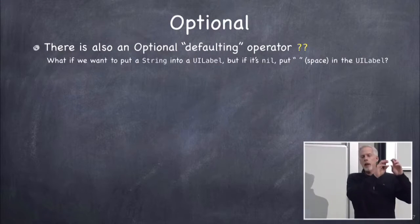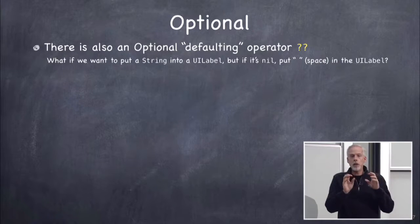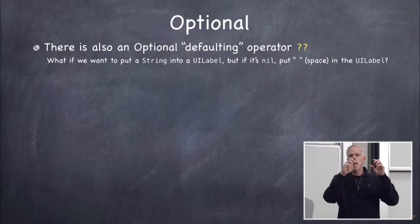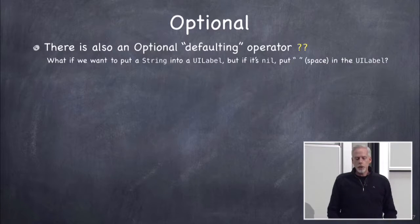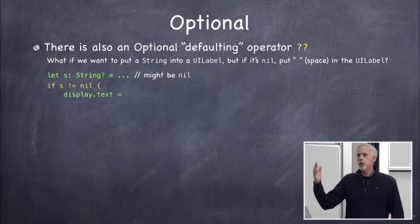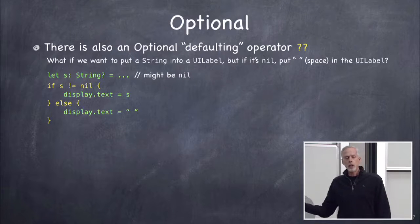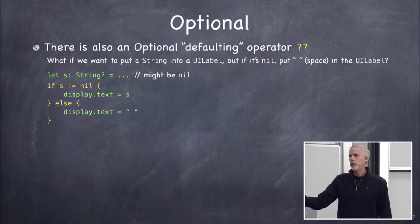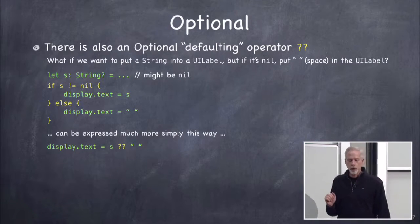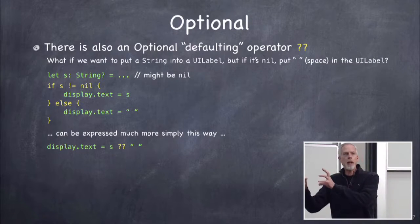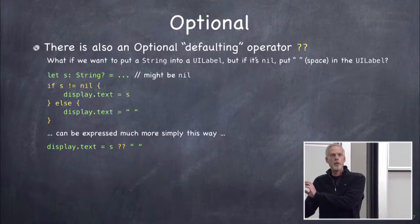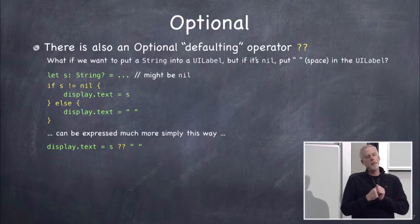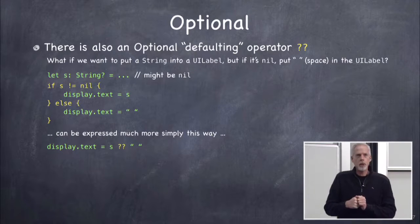Another cool optional feature is optional defaulting. If you want to put a string in your UILabel's display but the string might be nil — which would collapse the label — you can use the double question mark operator: display.text = s ?? " ". That means if s is nil, use the default value instead. You'll use this all the time. That's basically it for optionals; there are a couple more things I'll show you later.